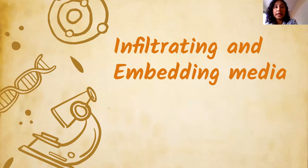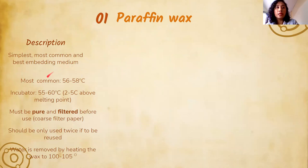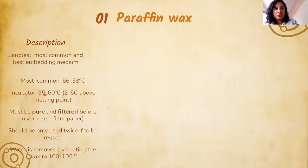Now let's tackle infiltrating and embedding media. First and most important is paraffin wax — the simplest, most common, and best option, routinely used in the laboratory. The most common melting point is 56 to 58 degrees Celsius. The paraffin oven maximum is 60 degrees Celsius, and you set it 2 to 5 degrees higher than the melting point.